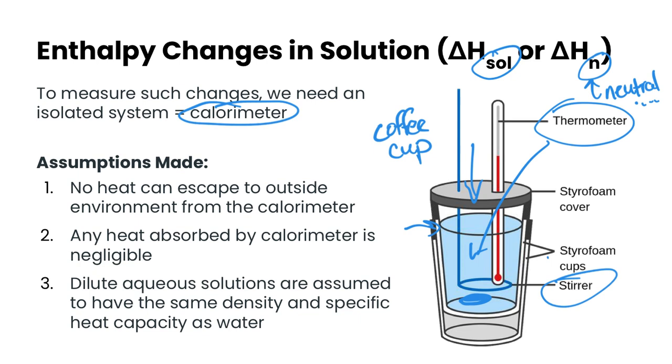So we make several assumptions when we use one of these coffee cup calorimeters. The first being that no heat can escape to outside the environment from the calorimeter, which is not true, a bit of heat does get out. The second assumption is any heat absorbed by the calorimeter is negligible, which is not necessarily true, but it just helps make the calculations easier. And finally, we assume dilute aqueous solutions are assumed to have the same density and specific heat capacity as water. So all three of these assumptions do make calculations easier, but they are also possible experimental errors within calorimetry itself. So you would want to talk about all three of these assumptions if you were talking about experimental error associated with calorimetry.